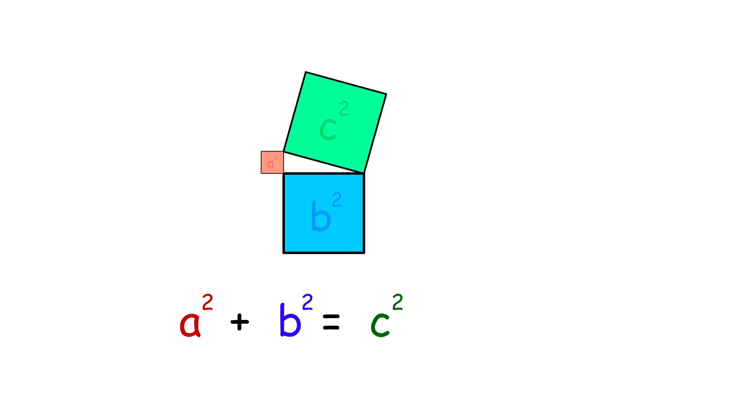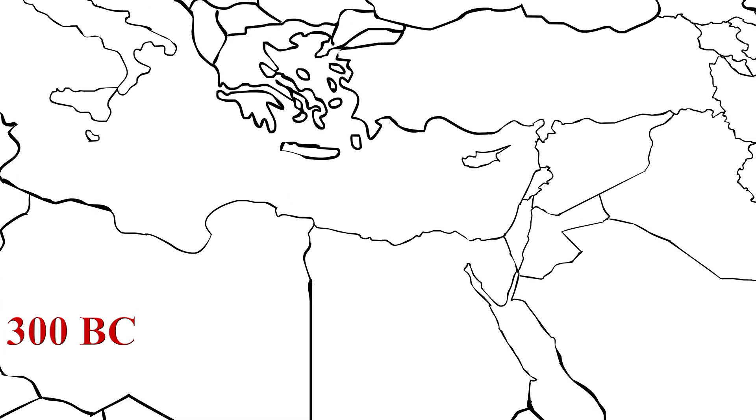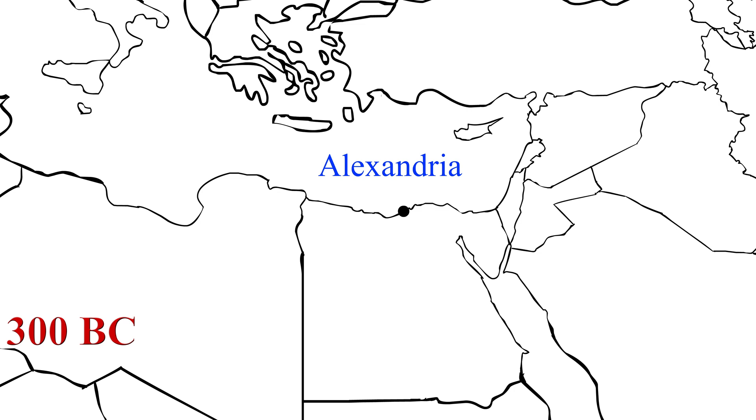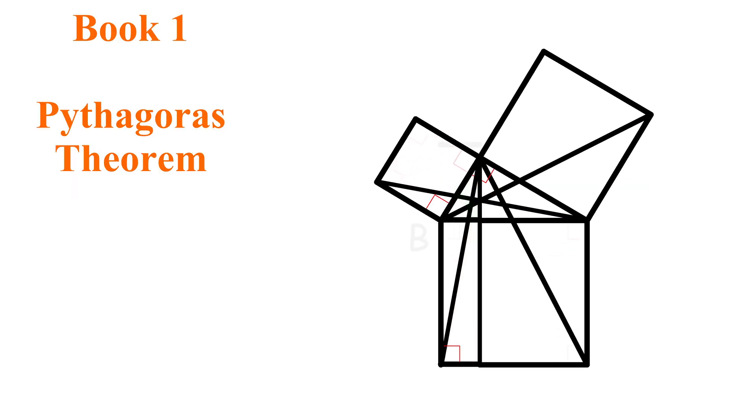But don't take my word for it. Around 300 BC the world's first geometry textbook called Euclid's Elements was published. It consisted of 13 books and the first entire book is used to prove the Pythagorean Theorem.